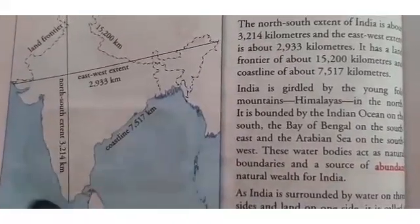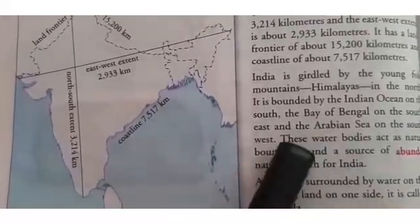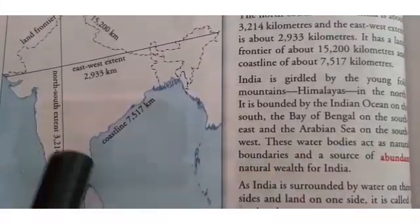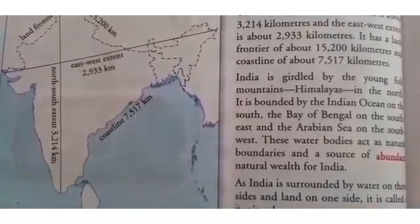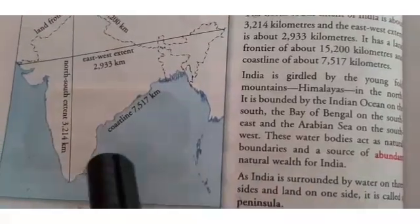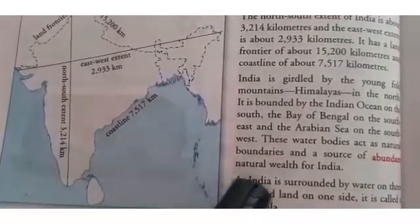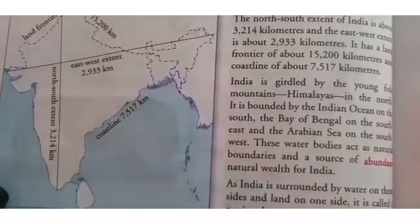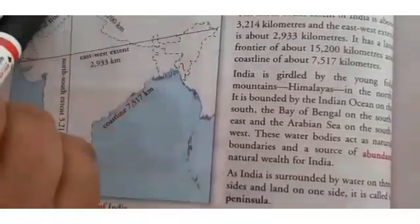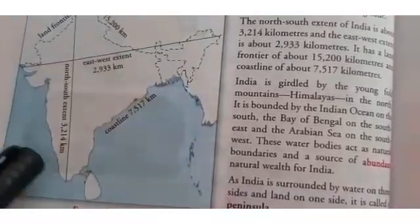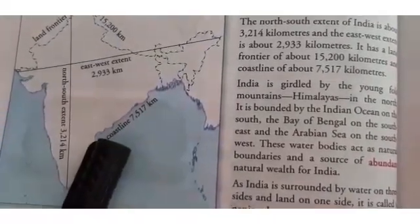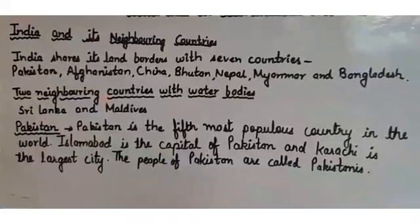All this blue part is water. These water bodies act as natural boundaries — they are not man-made, they are natural boundaries — and they are a source of abundant natural wealth for India. India is surrounded by water on three sides and land on one side. This type of landmass is called a peninsula.